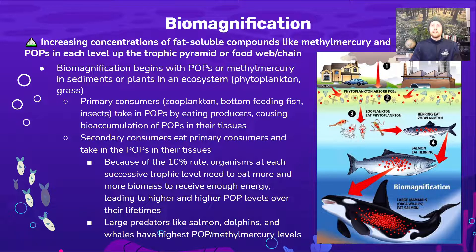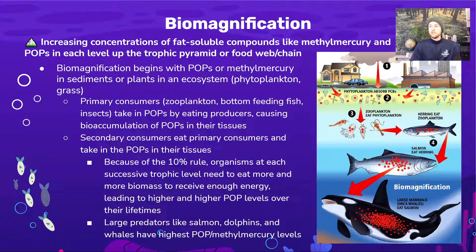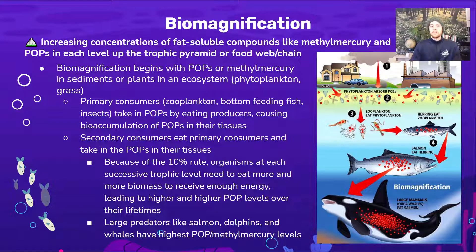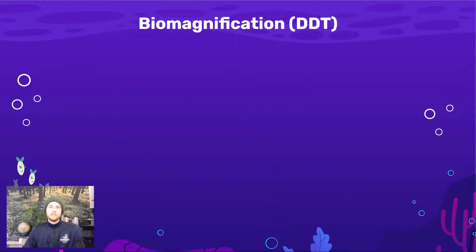Looking at this diagram, we can see the whale as the highest consumer — actually looking like a quaternary consumer — having by far the highest levels. The salmon eating the herring would have the next highest levels. As we go down the trophic levels, we have decreasing levels of persistent organic pollutants, and vice versa — as we go up the trophic levels, higher levels of persistent organic pollutants.